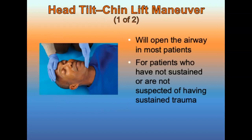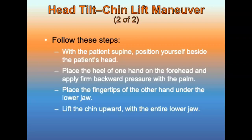The first way to open the airway is the head tilt-chin lift maneuver. This will open the airway in most patients. For patients who have not sustained or are not suspected of having spinal injuries, this simple maneuver is sometimes all that is needed for a patient to resume breathing. To perform it: with the patient supine, position yourself beside the patient's head. Place the heel of one hand on the patient's forehead and apply firm backward pressure. Place the fingertips of the other hand under the patient's lower jaw and lift the chin upward with the entire lower jaw, helping to tilt the head back.